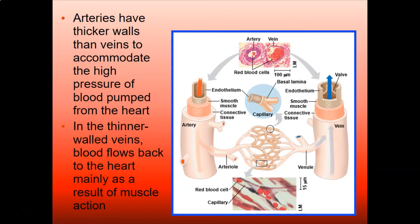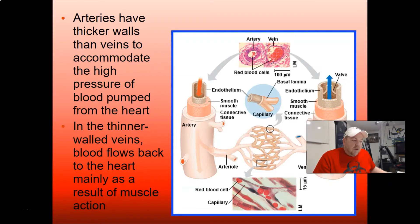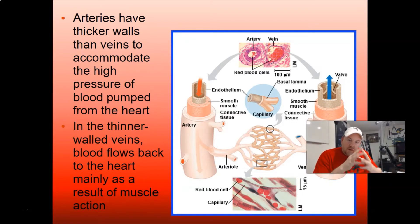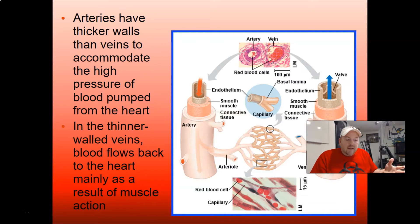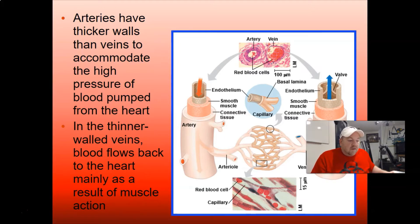Why would arteries need a thicker layer of smooth muscle and connective tissue? Well, your heart is pounding blood away from it through arteries, so arteries experience really high blood pressure — they're going to need that thicker, tougher wall. That's why blood is said to be flying through arteries. But when you get to a capillary bed, it slows down. Veins are thinner-walled because they're just returning blood back to the heart.